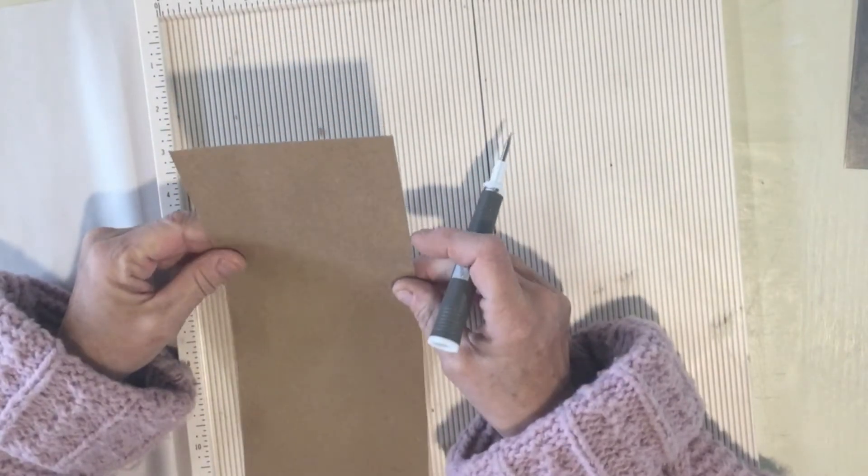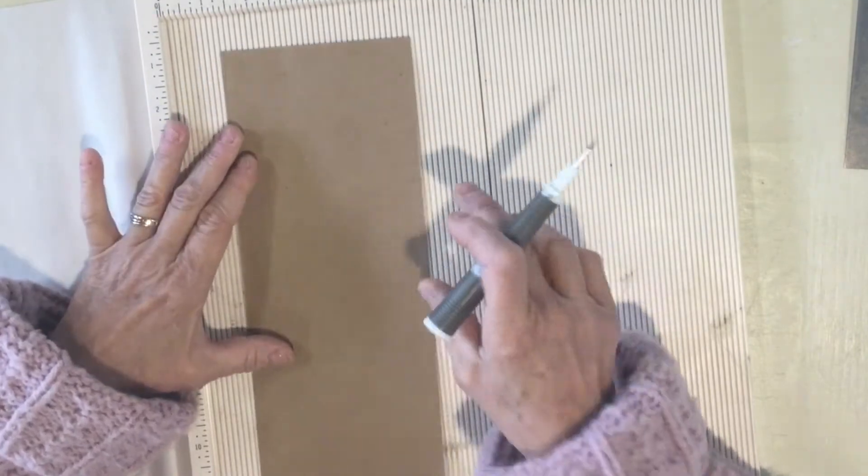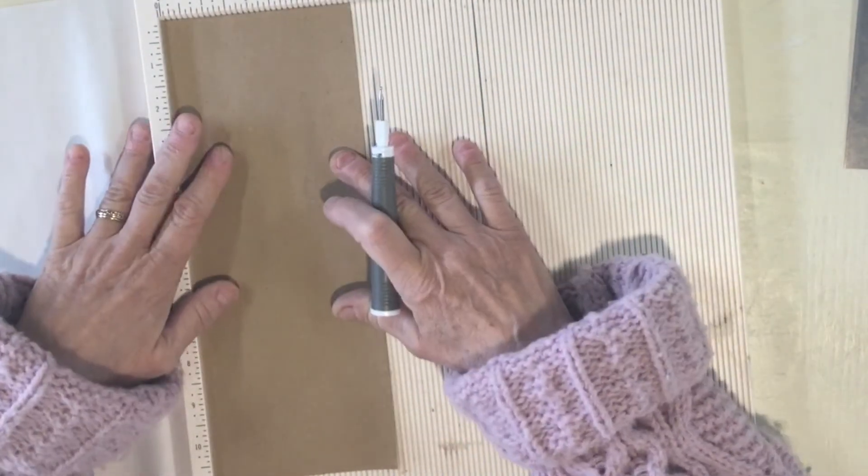I took an eight and a half by eleven and cut it in half so I can get two from one sheet. This is now four and a quarter by eleven. Now we're going to be doing scoring and we'll have the dimensions in the description.